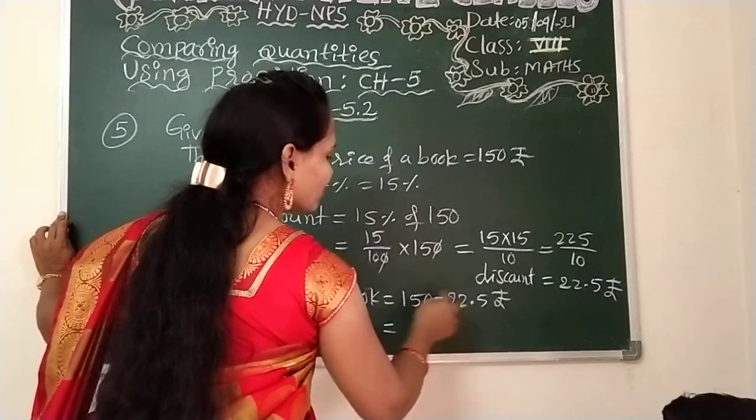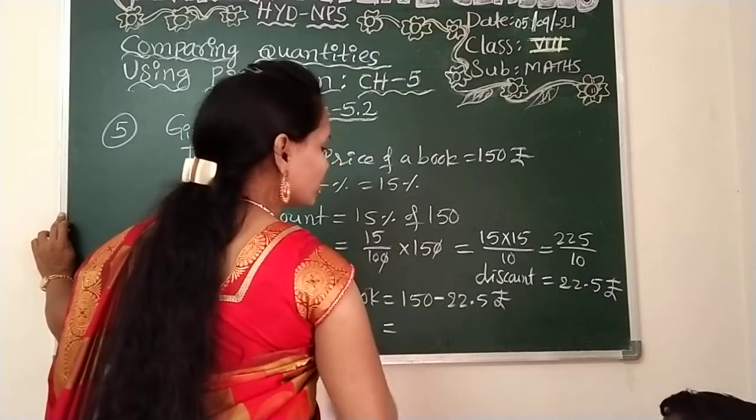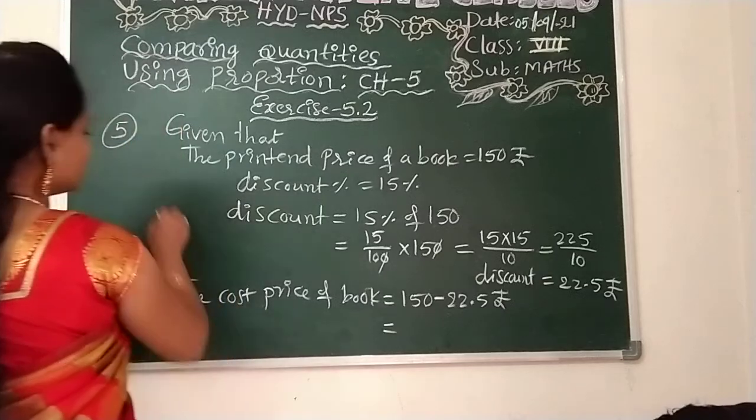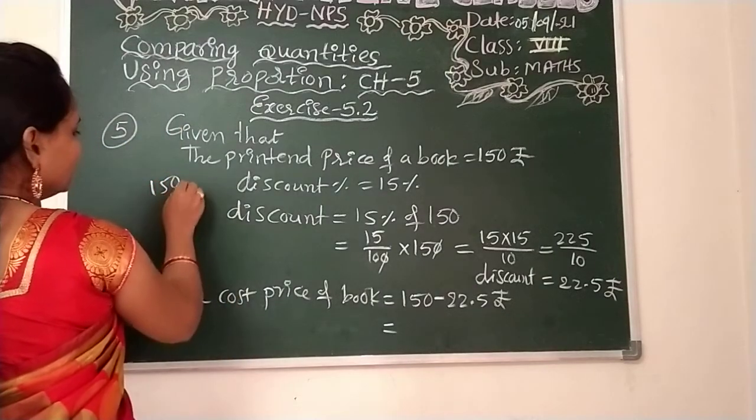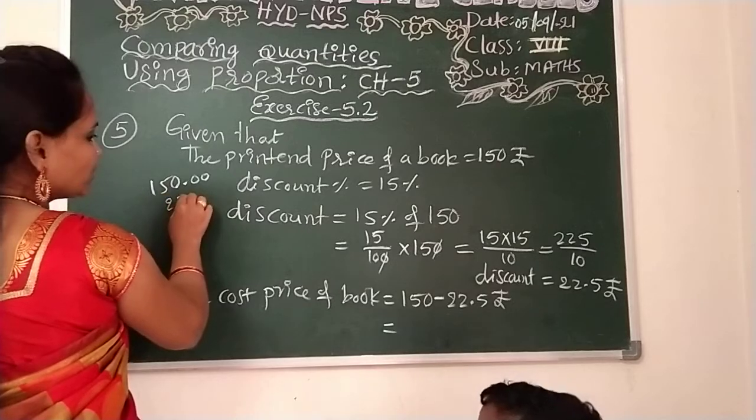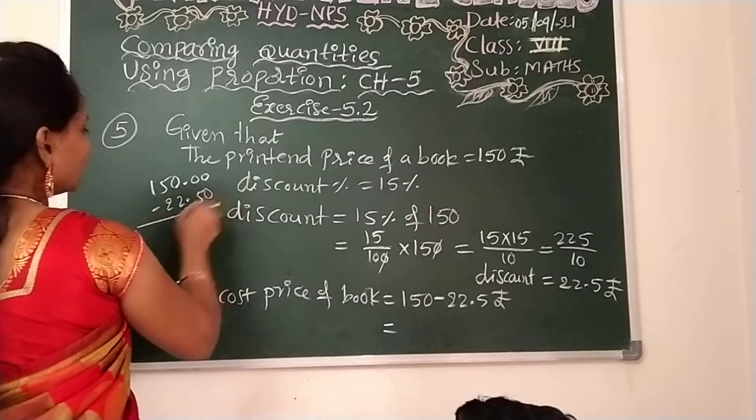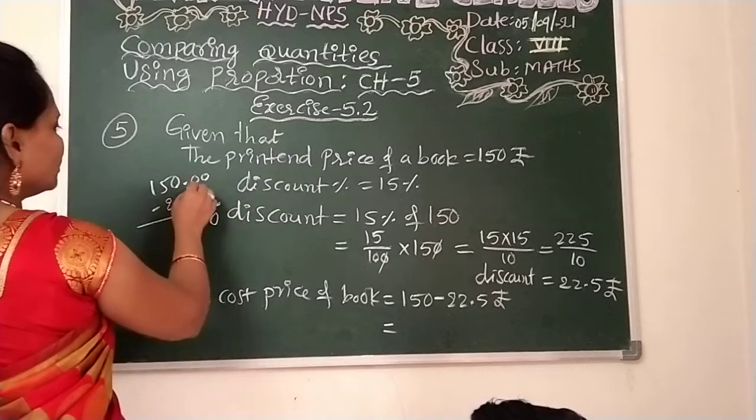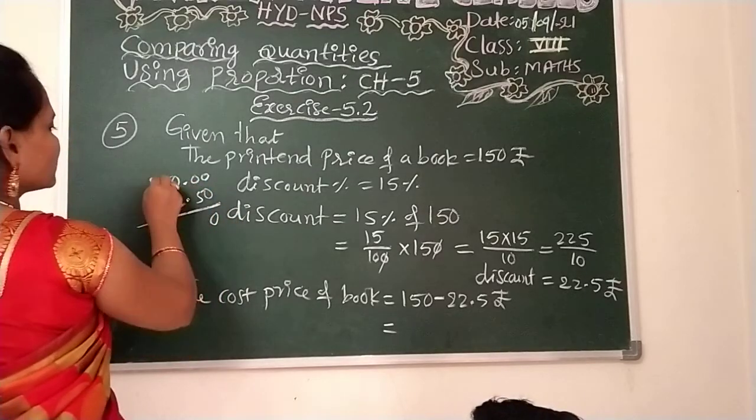Now 150 minus 22.5, we need to do the subtraction. Here I am doing 0.00, so 22.50. Here we can now do the subtraction, so take the borrow from the previous numbers.